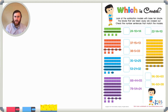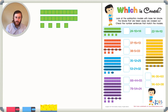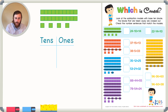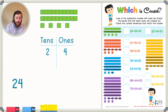Let's look at the first problem. I see the base 10 blocks — there are two longs and four cubes. What does that look like in number form? Let's make a place value chart with the tens place and the ones place. There are two longs, otherwise known as tens, so we put a 2 in the tens place. And there are four ones, so our starting number is 24.